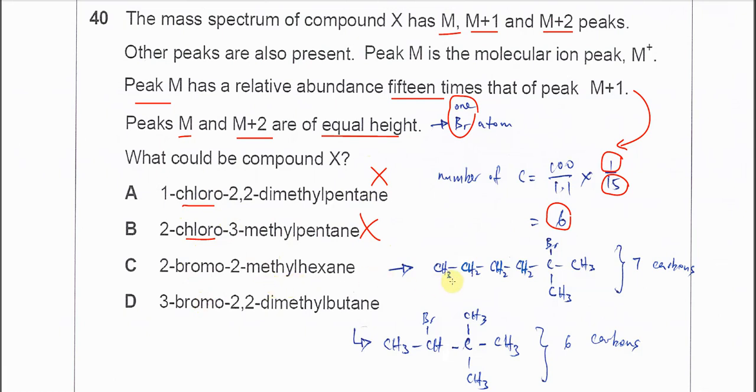If you try to draw the structure out, you know that this C, 2-bromo-2-methylhexane, it has 7 carbons. So this one also cannot be the answer.